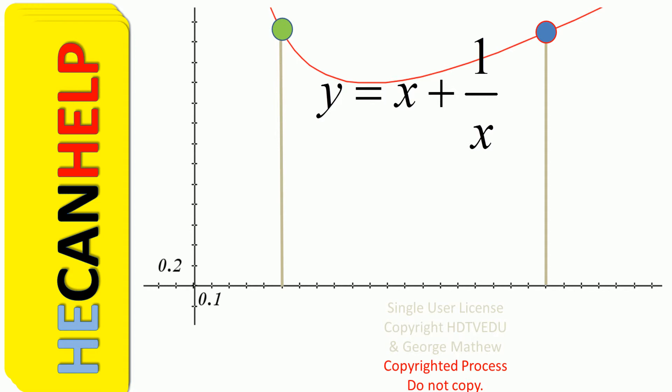So we get two solutions. If you plot y equals x plus 1 over x, then at the point where it equals 2.5,